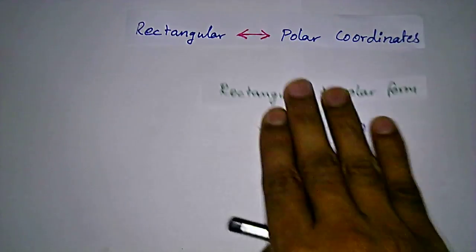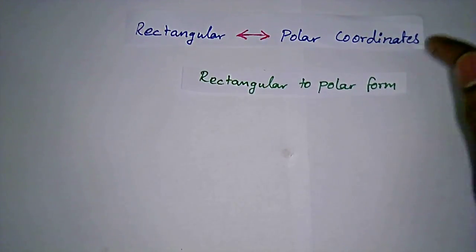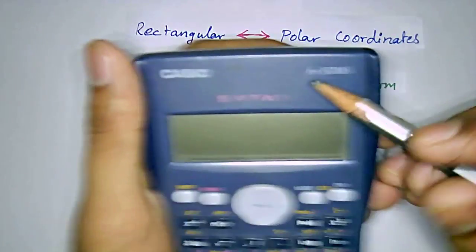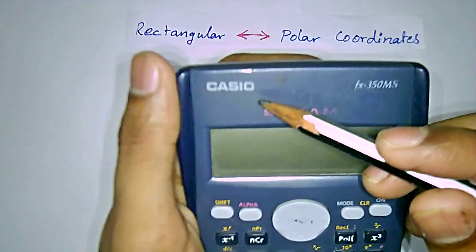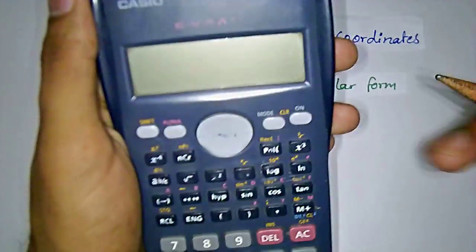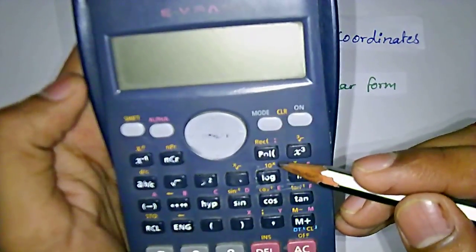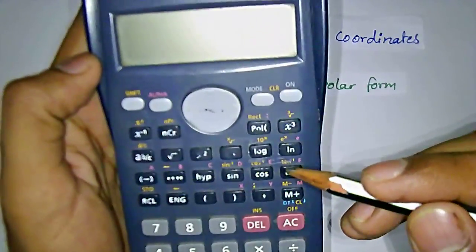Here, let me see how we are going to change rectangular to polar form using the calculator which is scientific one. Casio fx-350MS which has the button for rectangular polar coordinates.